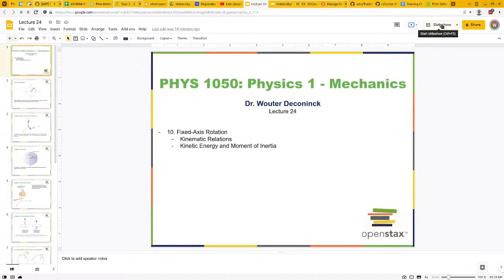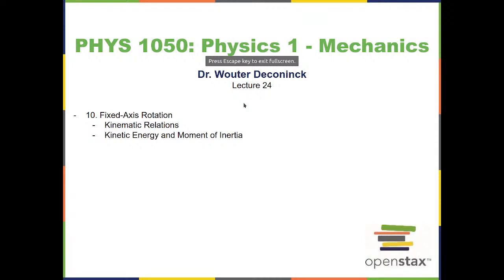Good morning, we'll pick up where we left off in the last lecture. We ended chapter nine on momentum and collisions, and today we're going to start with chapter ten on fixed axis rotation — that's any rotation where the axis is fixed. It's similar to what we talked about before with uniform and non-uniform circular motion, so some of this will be familiar, but now it applies to any rotation of an extended physical body around a fixed axis.